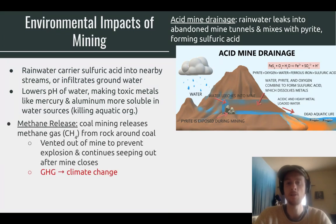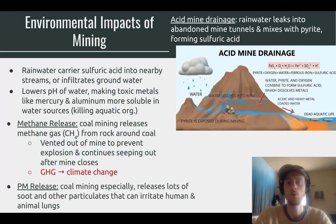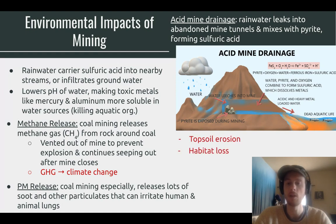Another issue is methane release — because coal deposits have methane surrounding them, it must be vented out of the mine to prevent buildup and explosions, but methane is a potent greenhouse gas that contributes to climate change. There is also a lot of particulate matter released: coal produces soot and small particles that get into the air and can damage lungs, making mine workers prone to lung cancer and respiratory issues. Additionally, there is significant topsoil erosion, habitat loss from surface mining, and increased stream turbidity as disturbed sediments flow into rivers and streams.